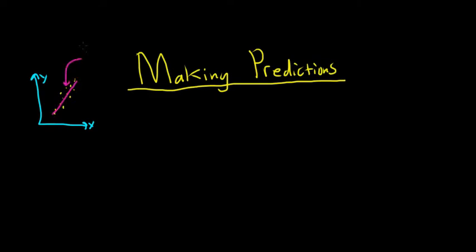This line has a name. It's called the least squares line, and it's written y = a + bx.